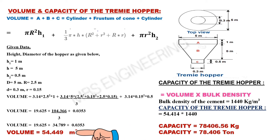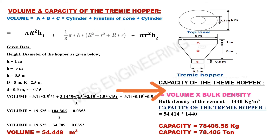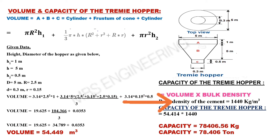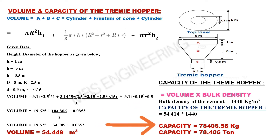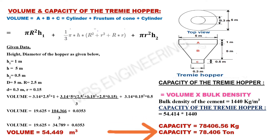The volume of the Tremi hopper is 54.449 cubic meters. Next, we learn how to calculate the capacity: volume multiplied by bulk density. Assuming the bulk density of cement is 1,440 kilograms per cubic meter, 54.449 multiplied by 1,440. The Tremi hopper has a capacity of 78,406.56 kilograms, or 78.406 tons.